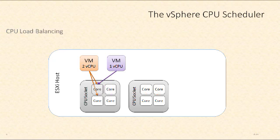This is CPU load balancing. In this situation, we see one virtual machine with two virtual CPUs, and another virtual machine with one virtual CPU, and they're sharing a processor core. If that processor core starts to get overwhelmed and there's just too much work happening on it, the ESXi host will dynamically move virtual machines around from one processor to another to equalize that workload.